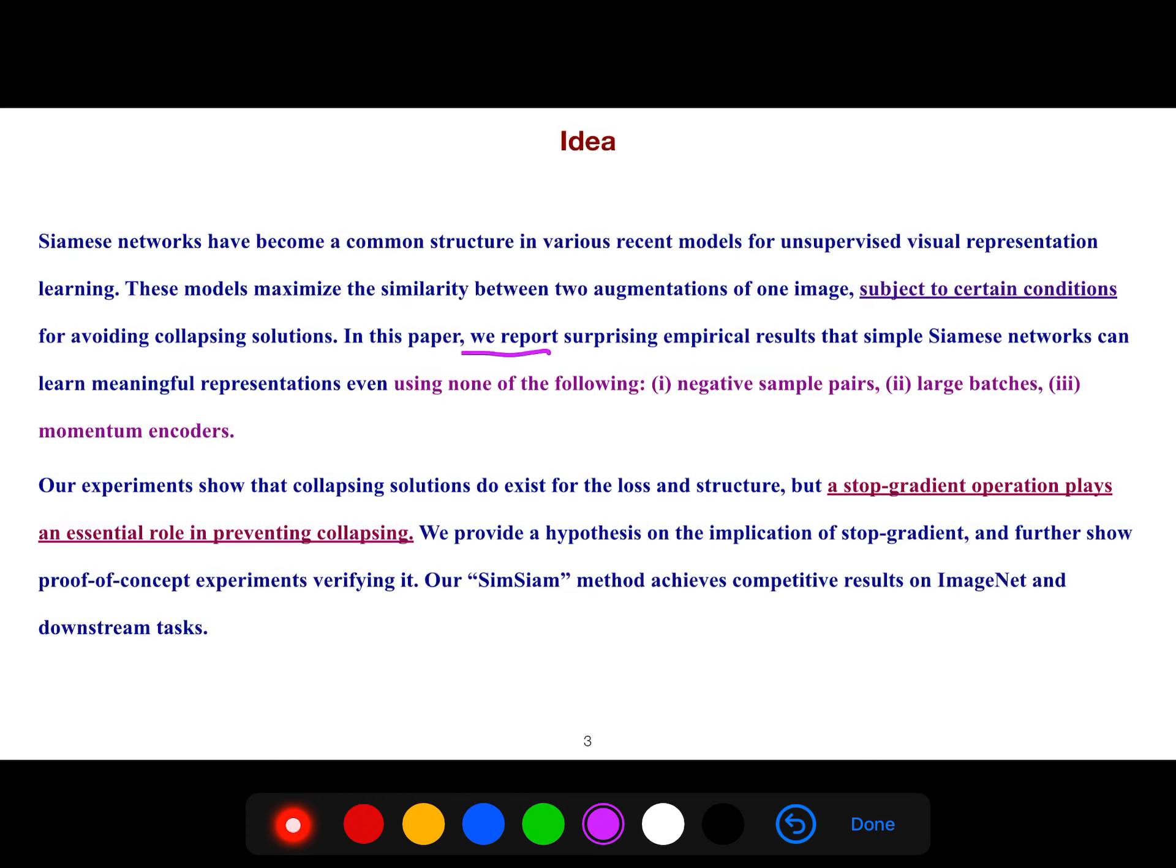We report surprising empirical results that simple Siamese networks can learn meaningful representations even using none of the following: negative sample pairs, large batches, or momentum encoders.